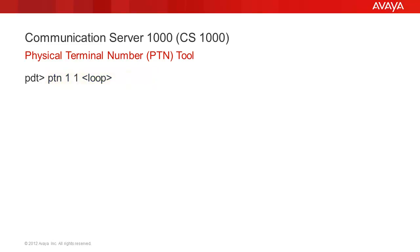To print out all the PTNs assigned to time slots in all the banks of a particular loop, enter PTN space 1 space 1 space the loop number. To print out all the PTNs assigned to time slots in all loops and all banks, enter PTN space 1 space 2. Please note that this may be a large printout if the CS1000 is a large and busy system.